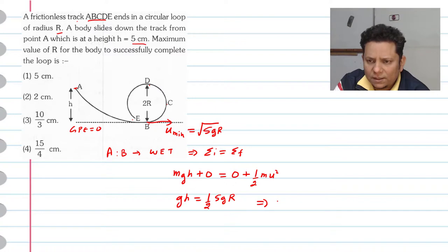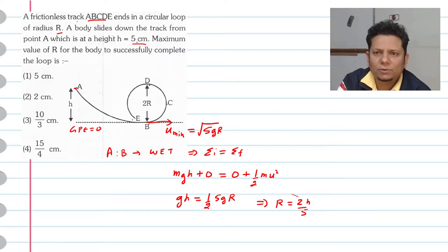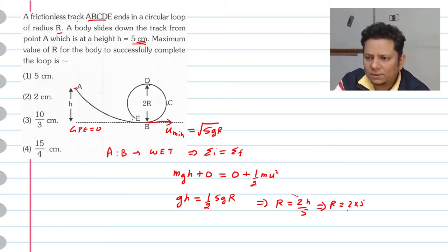Now, u squared equals 5gR from the vertical circle condition, and h equals 5 cm. So gh equals half of 5gR, which implies R value is 2 multiplied by 5 cm divided by 5. So this implies R value is 2 cm.